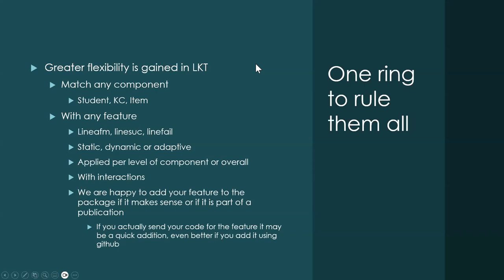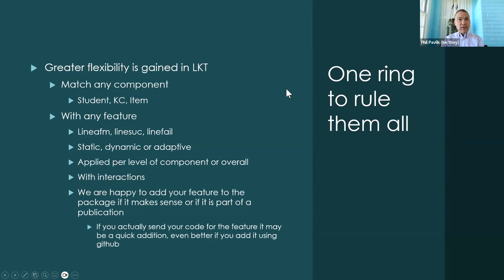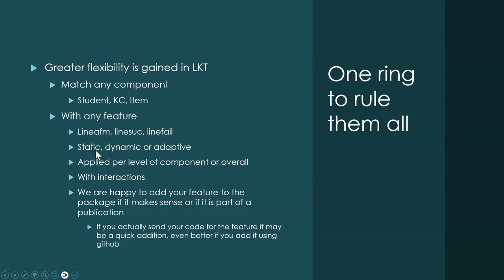Greater flexibility is gained in LKT. You can match any component — the student, the KC, the item — and work simultaneously with KCs and items with any feature. Features can be static (not changing per KC), dynamic (changing but not based on prior performance), or adaptive (changing based on performance).